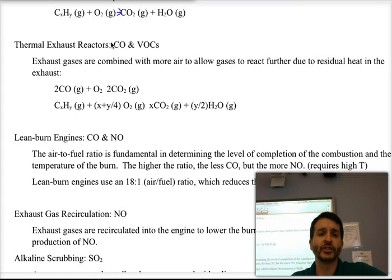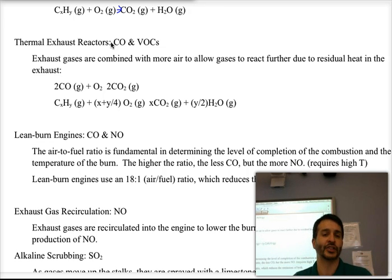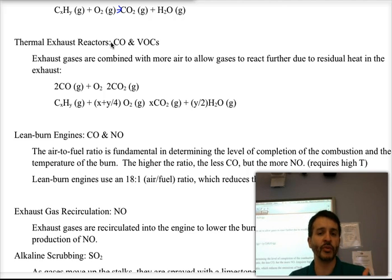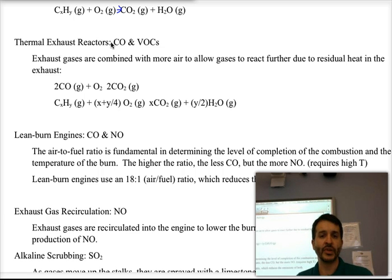Another method we can use is thermal exhaust reactors. Those are used to eliminate or minimize the emission of carbon monoxide and VOCs. Basically, it's a second combustion — you take the exhaust that contains the not-fully-oxidized products, because carbon monoxide can still go to carbon dioxide, and the VOCs can contain oxygen or not in their CH formula. If you react that in the presence of more oxygen, you can get it all the way to carbon dioxide and water, which is much less toxic to the environment.